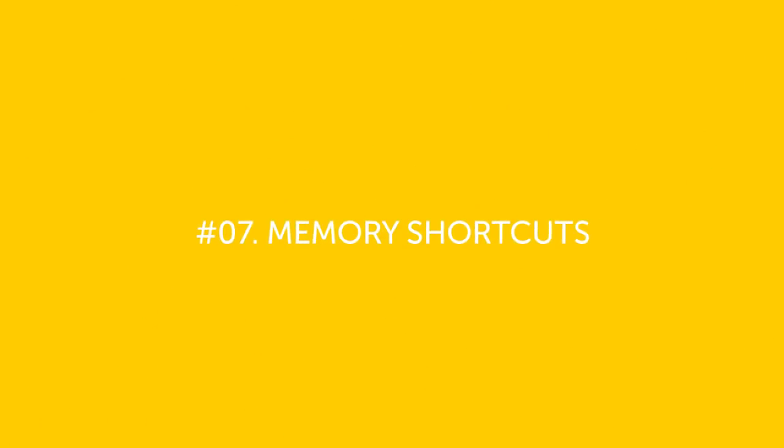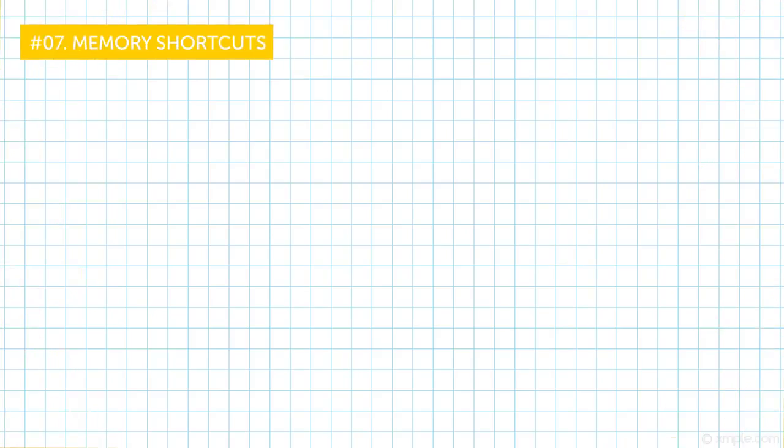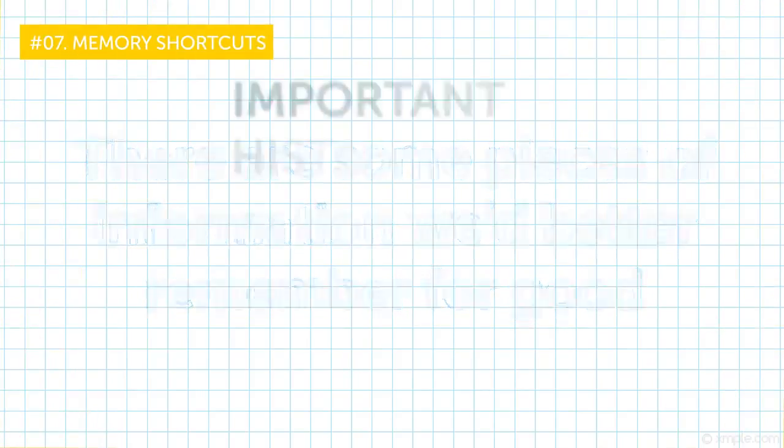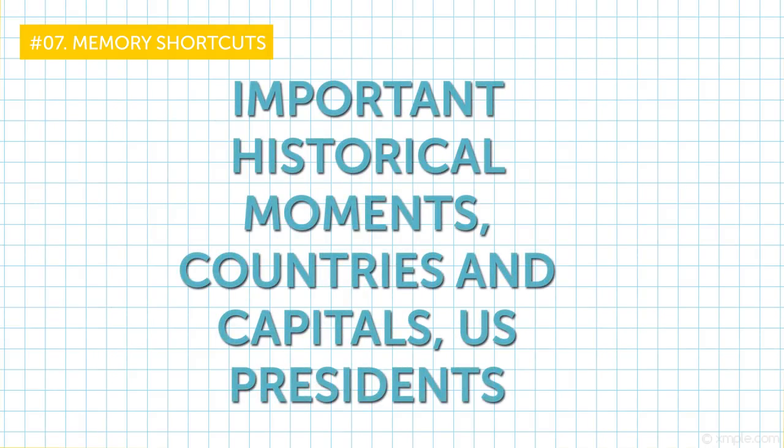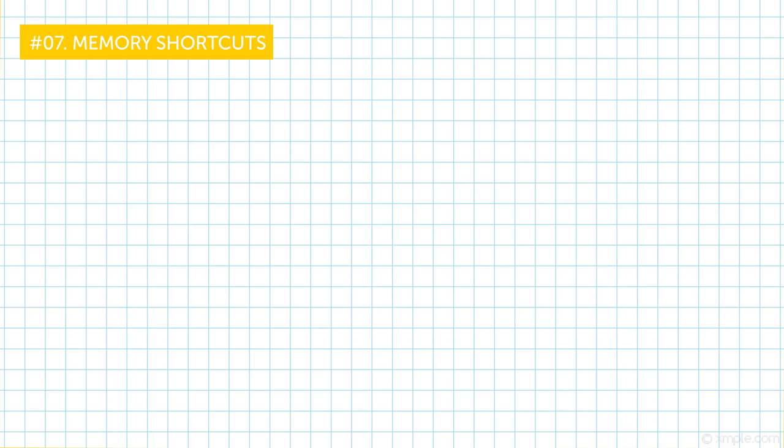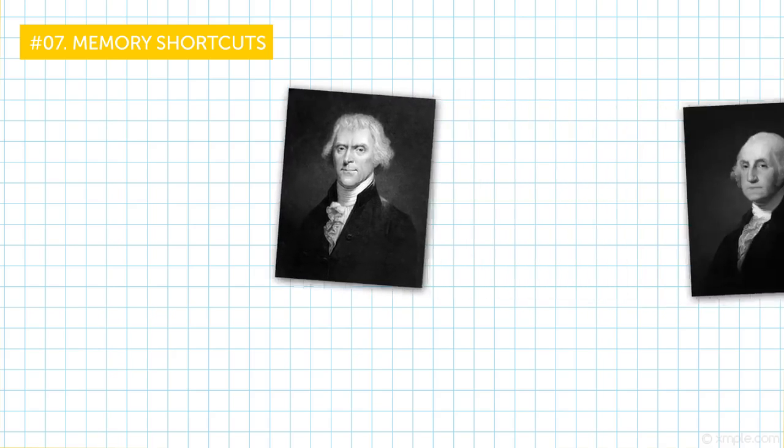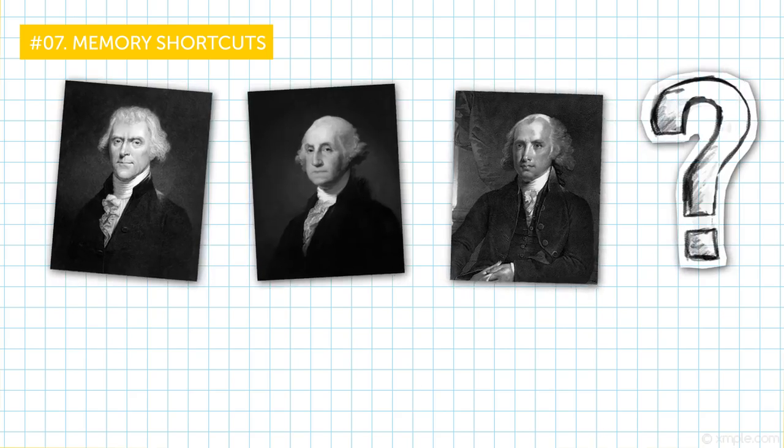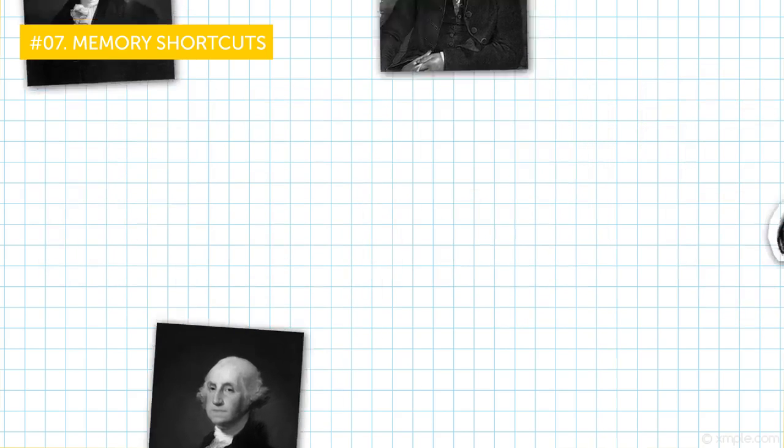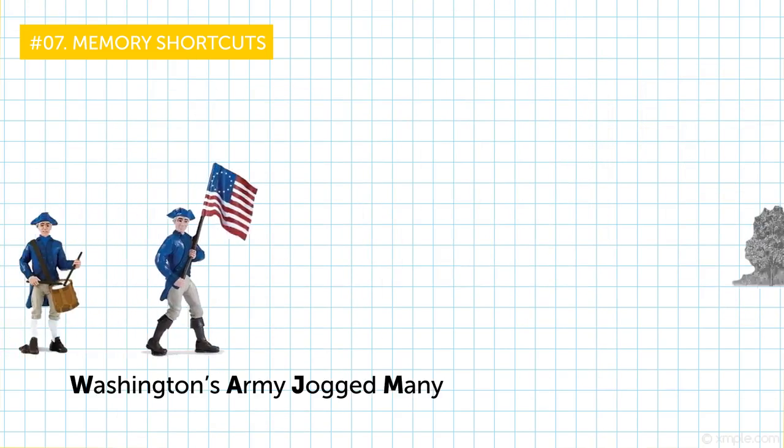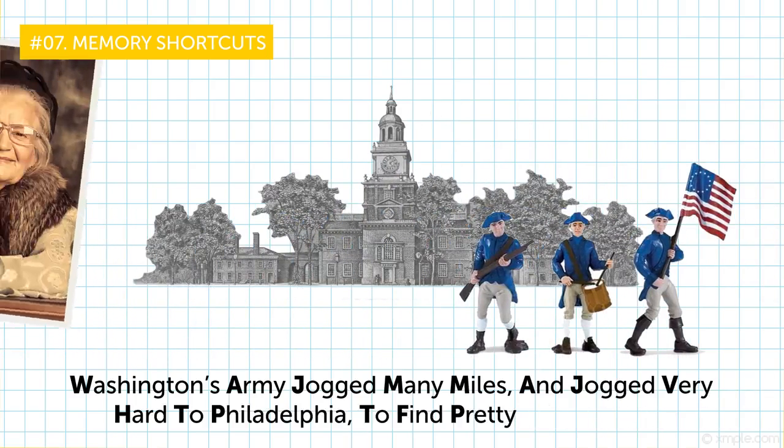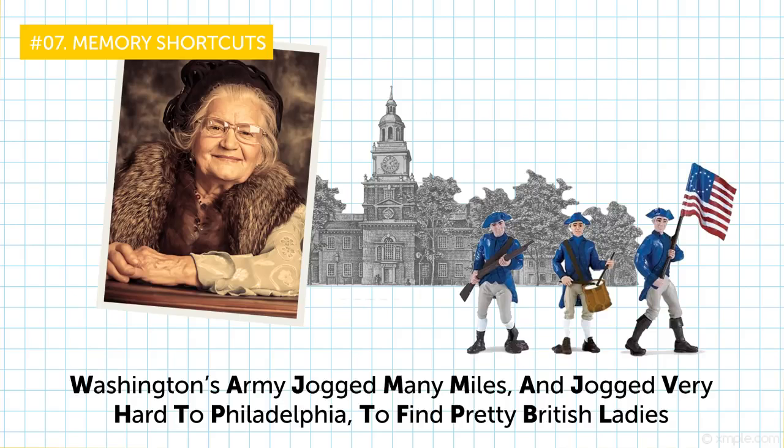Number 7, Memory shortcuts. There are some pieces of information we'd better remember for good. Important historical moments, countries and capitals, U.S. Presidents. Can you name the first 16 of them? Washington definitely. And then it was Jefferson, or Madison? I can't tell you. But I can definitely tell you that Washington's army jogged many miles and jogged very hard to Philadelphia to find pretty British ladies. Makes no sense? Oh yes, it does.